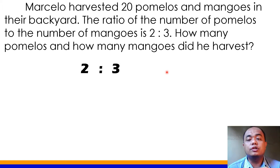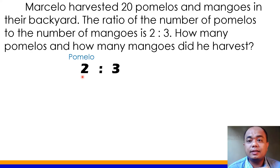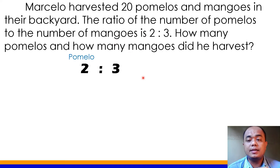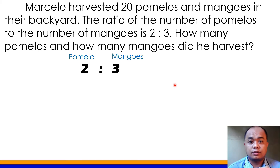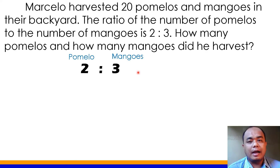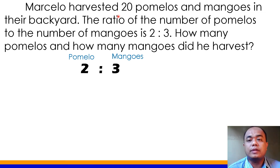Binigyan tayo dito ng ratio na 2 is to 3. Sa 20 na ito, ang ratio ng pumelo sa mangoes ay 2 is to 3. Through this given data, masasolve natin kung ilan ba talaga ang pumelo at ilan ang mangoes na na-harvest ni Marcelo. Yung 2 ang nagre-represent ng pumelo kasi una itong naibigay. Pangalawa ang mangoes, so ang 3 stands for the number of mangoes. In every 2 pumelos, there will be 3 mangoes harvested.